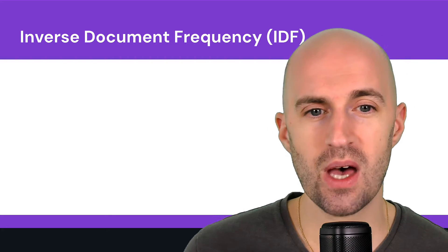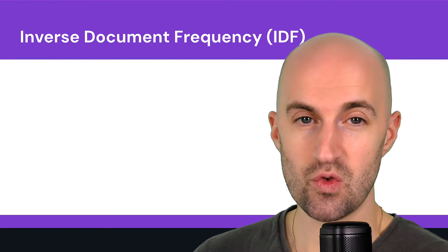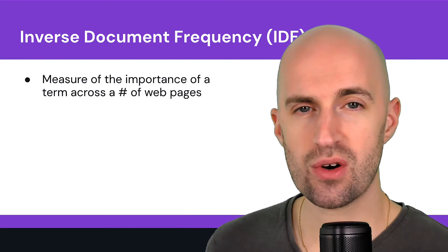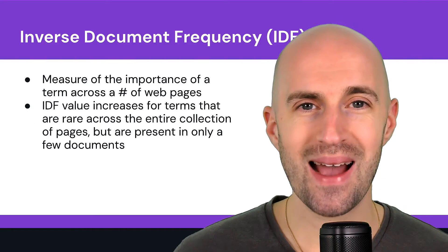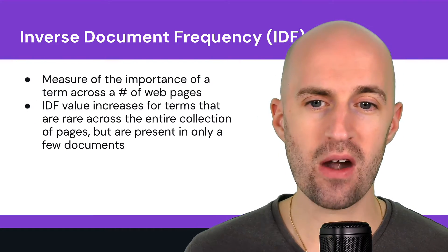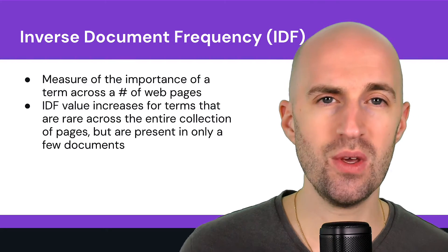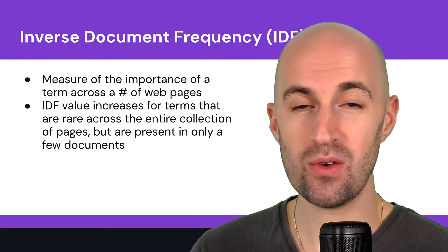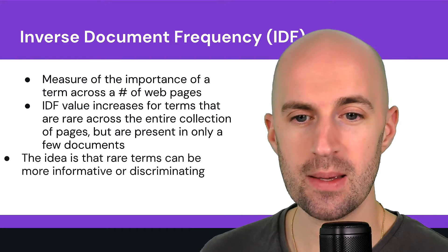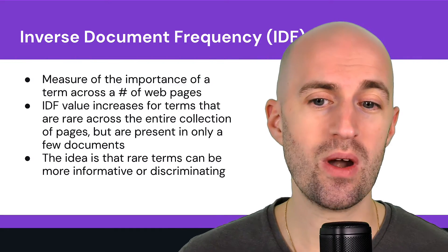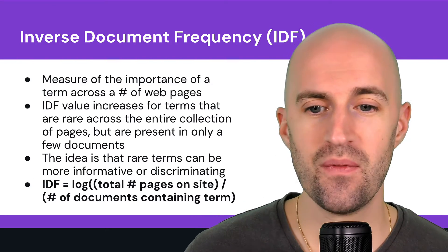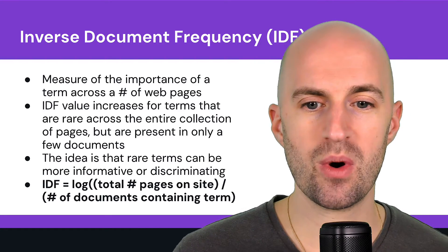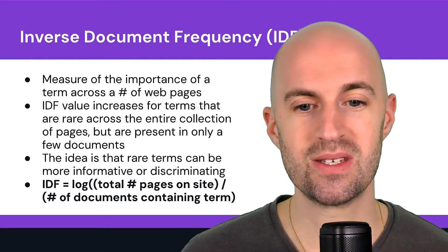Now the other half: IDF — Inverse Document Frequency. It's a measure of the importance of a term across a number of web pages. The IDF value increases for terms that are rare across the entire collection of pages but present in only a few documents. This gives you an idea of how important a specific keyword is relative to the entire website. Rare terms can be more informative or discriminating. The IDF formula is the logarithm of the total number of pages on the site divided by the number of documents containing that term.